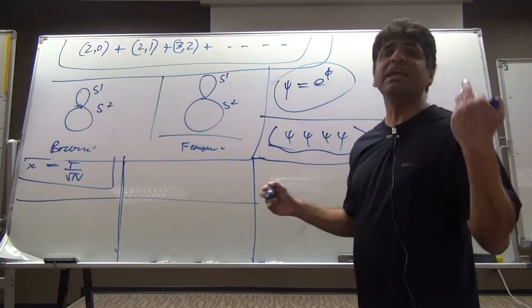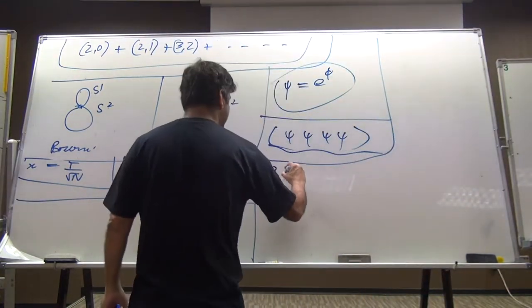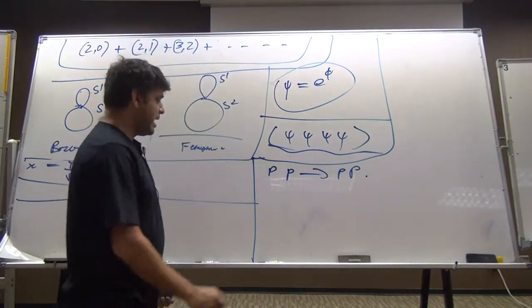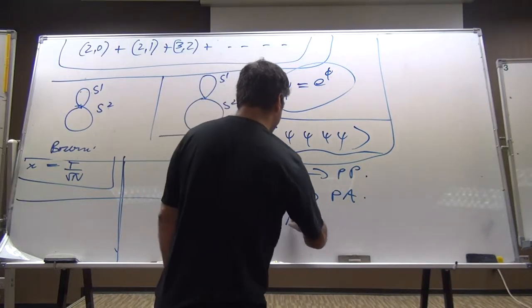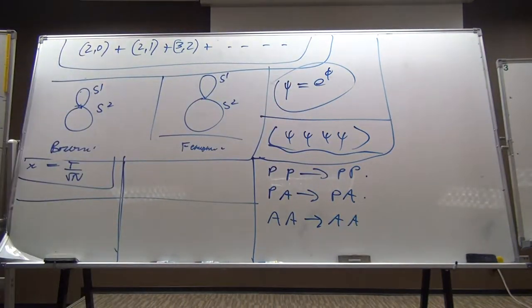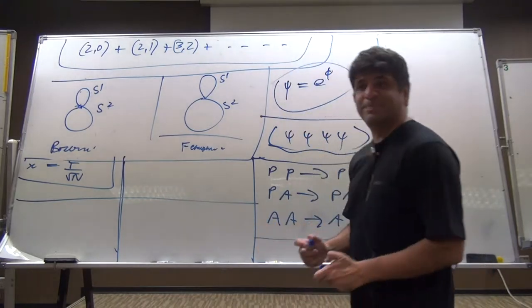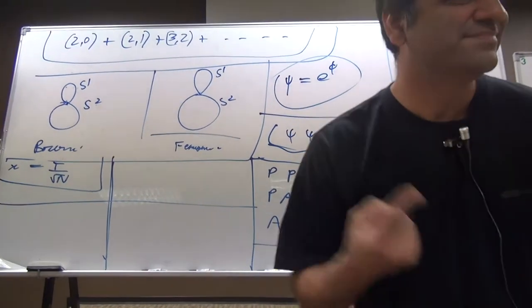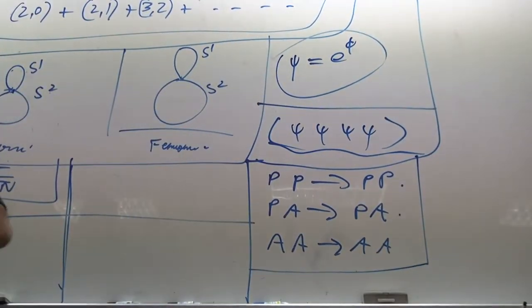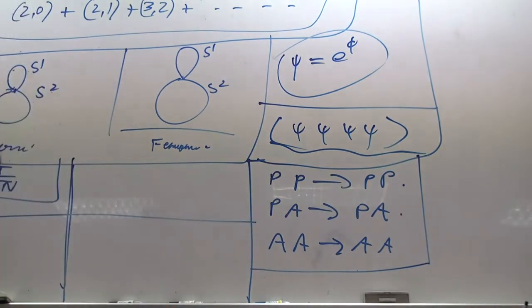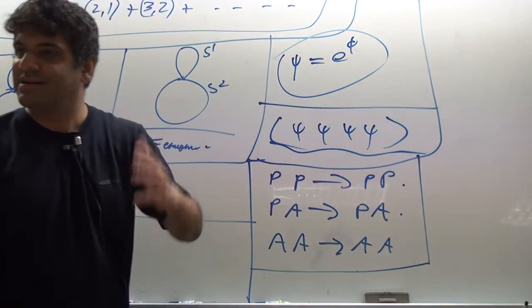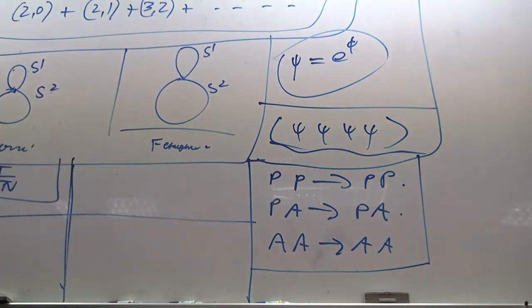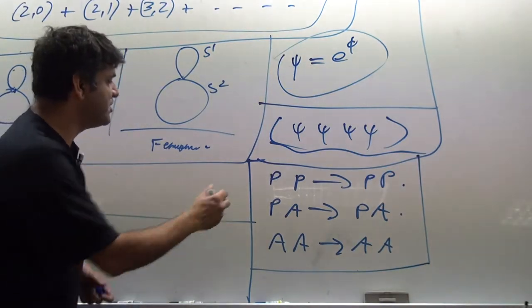Now there are basically three different scattering processes I could study: particle-particle going to particle-particle, particle-antiparticle going to particle-antiparticle, or antiparticle-antiparticle going to antiparticle-antiparticle. Those of you who are used to doing traditional field theory calculations know that these three processes are not independent of each other — once you know any one of these, you can get all the others by crossing symmetry. But we're going to encounter some issues with crossing symmetry in this theory, so I'm not going to make any assumptions to start with. This and this are related by CPT, but the other two are treated as genuinely independent.